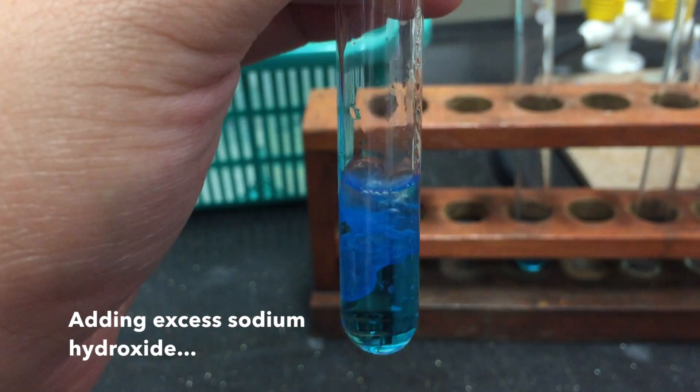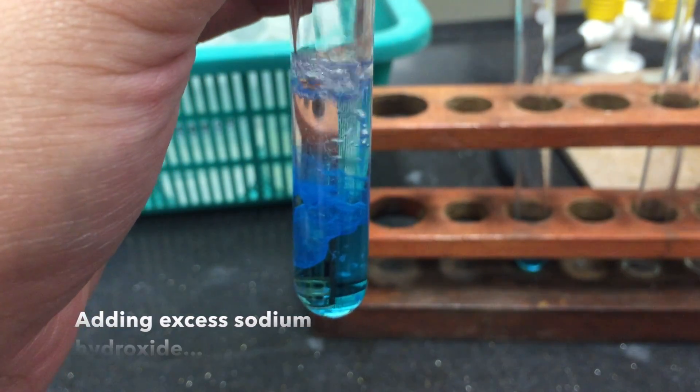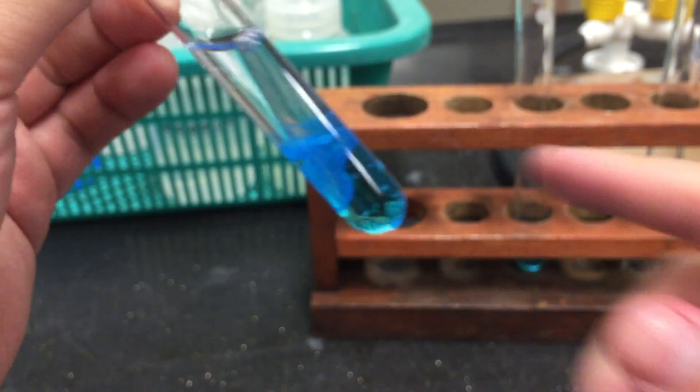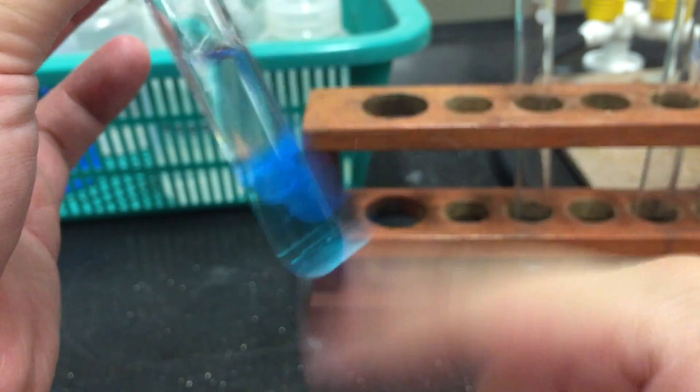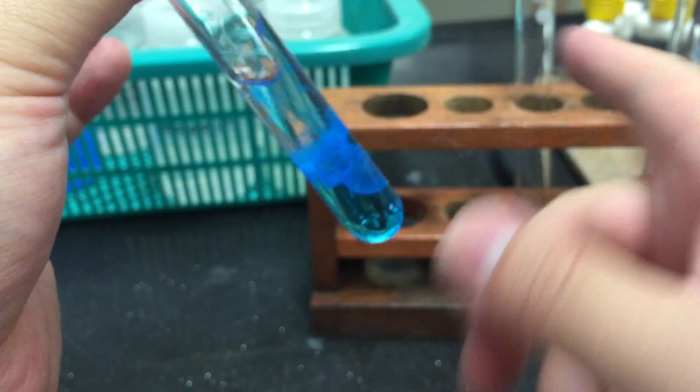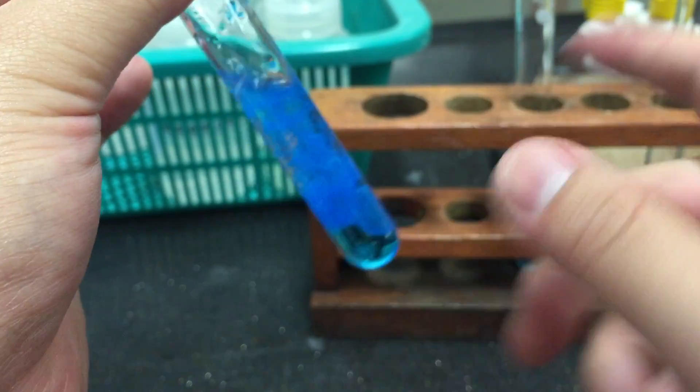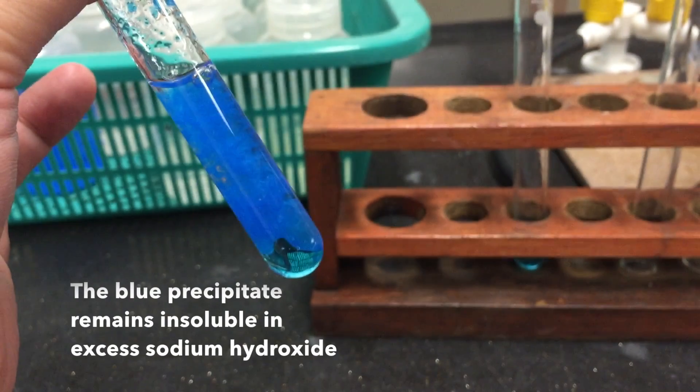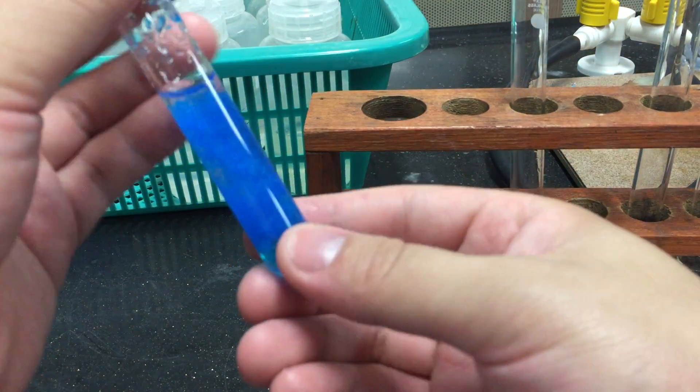Next, add an excess of sodium hydroxide. Shake the test tube to ensure thorough mixing. You will notice that the blue precipitate remains insoluble in excess sodium hydroxide.